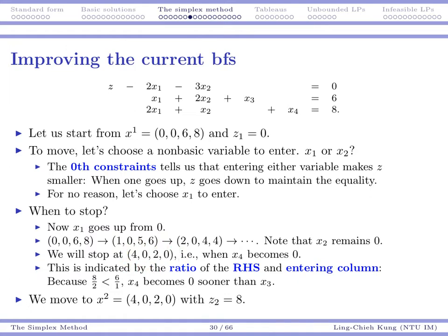Eventually we need to stop at 4, 0, 2, 0, because at that moment your x1 becomes 4 and your x4 becomes 0. If you increase x1 further, your x4 would become negative, which is not allowed. So you stop here.